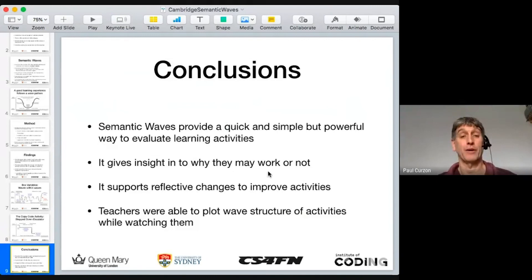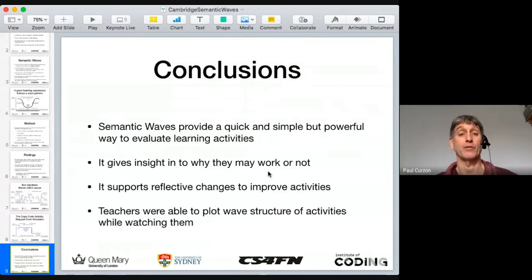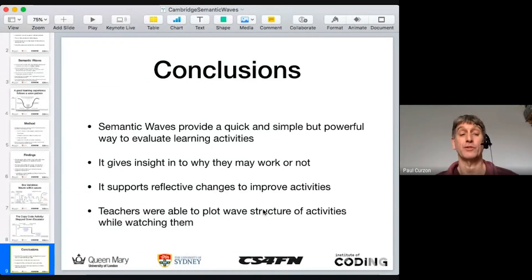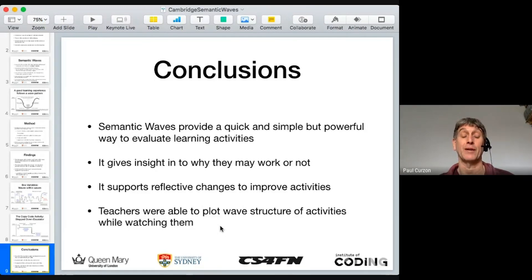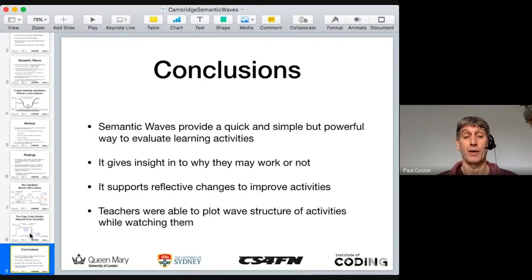The conclusions: Semantic Waves provide a quick and simple but powerful way to evaluate learning activities — you're basically just sketching a curve, which is very quick and easy to do. You can do it as it's happening or go into more or less detail. It gives insight into why activities may or may not work, and it supports reflective changes that might improve activities. We found that teachers and students have been able to plot wave structures of activities while watching them, point out the problematic places, and suggest what you would do differently. With the copy-code activity, what you start to move toward is something like PRIMM as a better way of doing that kind of activity.